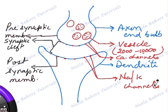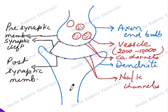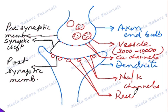Along with these channels, the postsynaptic membrane also has some receptors. These receptors are chemoreceptors. They are going to receive the neurotransmitter. So the postsynaptic membrane has sodium-potassium channels as well as the receptors.